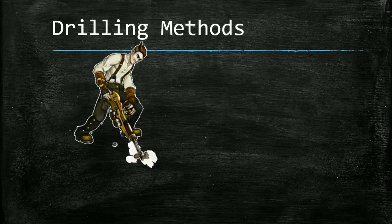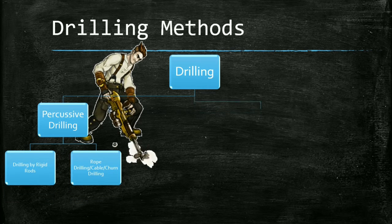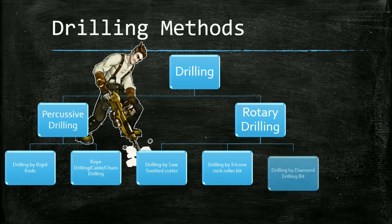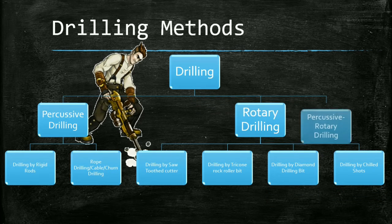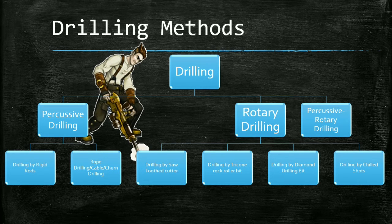There are two main types of drilling methods used in the mining industry. The first is percussive drilling and the second is rotary drilling. Percussive drilling has two subtypes: drilling by rigid rods, and rope drilling, also called cable drilling or churn drilling. Rotary drilling has four subtypes: drilling by saw-toothed cutters, drilling by dry-roller bits, drilling by diamond drill bit, and a combination of percussive and rotary drilling.